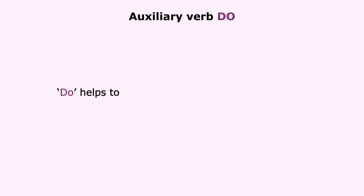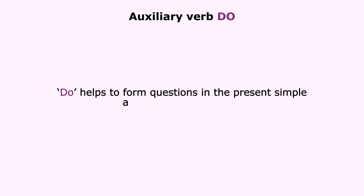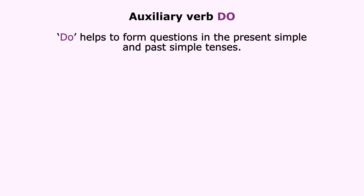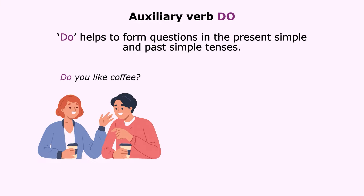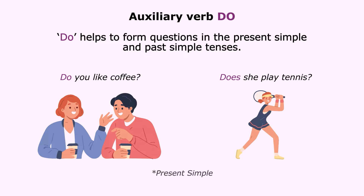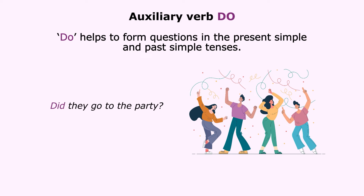Do helps to form questions in the present simple and past simple tenses. For example: 'Do you like coffee?'; 'Does she play tennis?' (present simple); 'Did they go to the party?' (past simple).